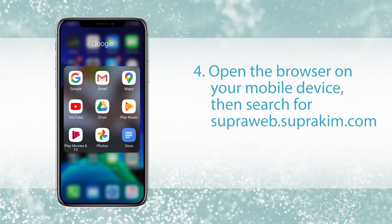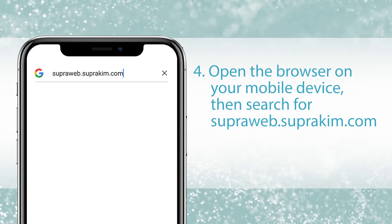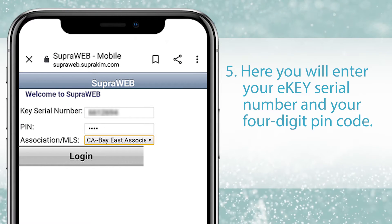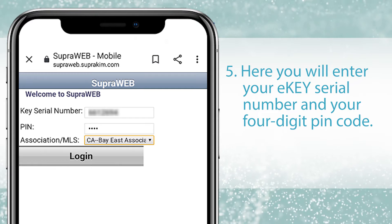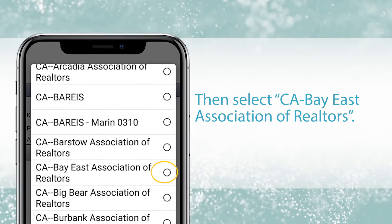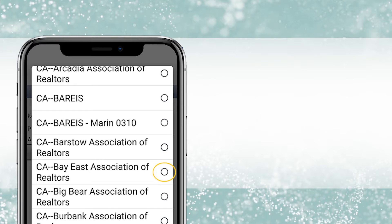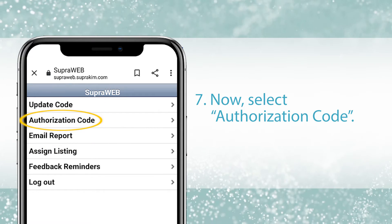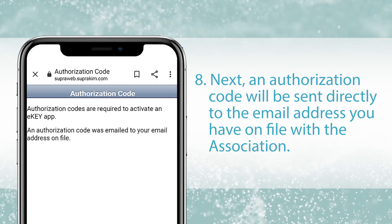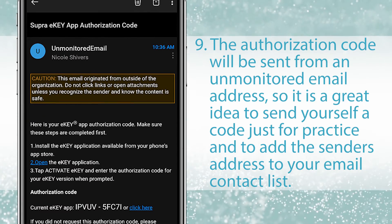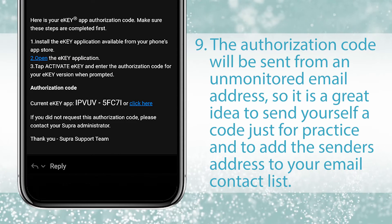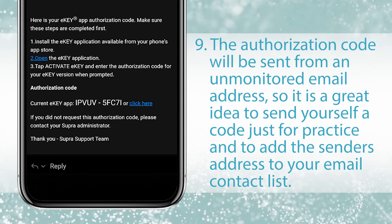Open the browser on your mobile device, then search for superweb.superkim.com. Here you will enter your E-Key serial number and your four-digit PIN code you used to open the bottom of the lockbox. Click the drop down next to Association MLS, then select California Bay East Association of Realtors. Now select authorization code. An authorization code will be sent directly to the email address you have on file with the association. The authorization code will be sent from an unmonitored email address, so it's a great idea to send yourself a code just for practice and to add the sender's address to your contact list in your email.